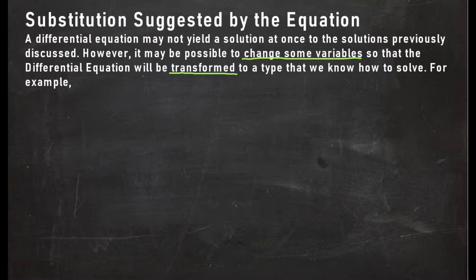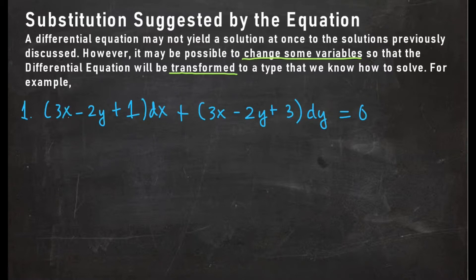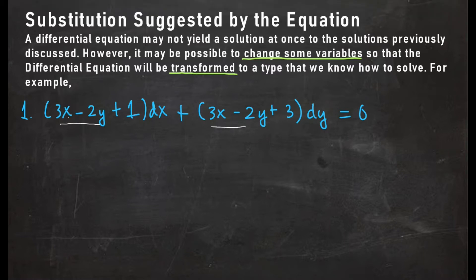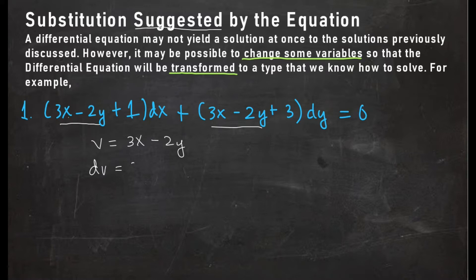Let's go ahead and answer some examples. For the first example, we have the quantity (3x - 2y + 1)dx + (3x - 2y + 3)dy = 0. What we can see here is that 3x - 2y is repeating, and that is what is meant by substitution suggested by the equation. The suggested substitution here would be v = 3x - 2y. Taking the differential gives us 3dx - 2dy.